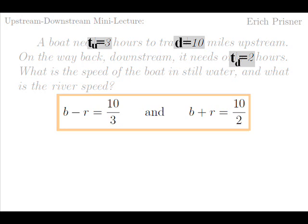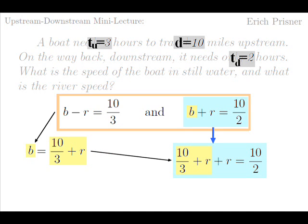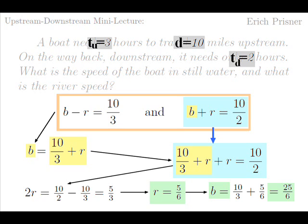Now we solve the first equation for b by adding r on both sides and get b equals ten over three plus r. Then we replace b in the second equation by this expression and get ten over three plus r, the former b, plus r equals ten over two. Or two r equals ten over two minus ten over three, which is equal to five over three. And we get r equals half of five over three, which is five over six. Plugging this into b equals ten over three plus r, we obtain b equals ten over three plus five over six, which is twenty-five over six. I leave it to you to check.